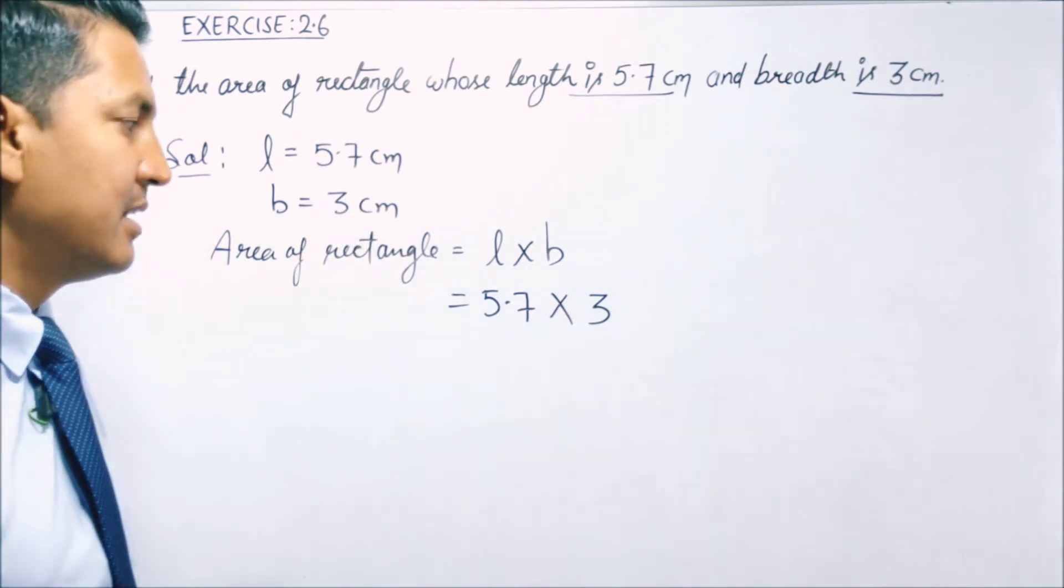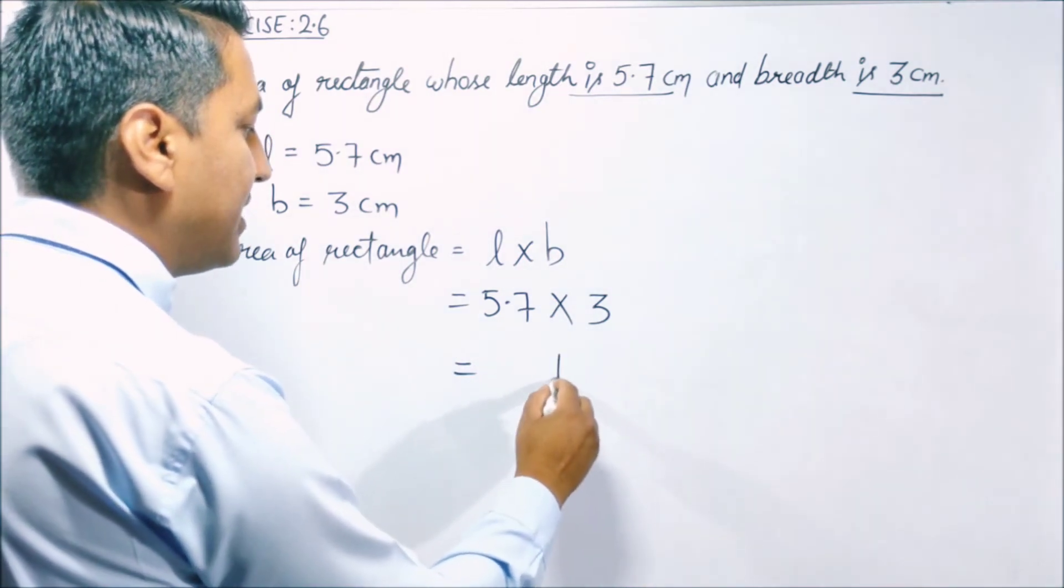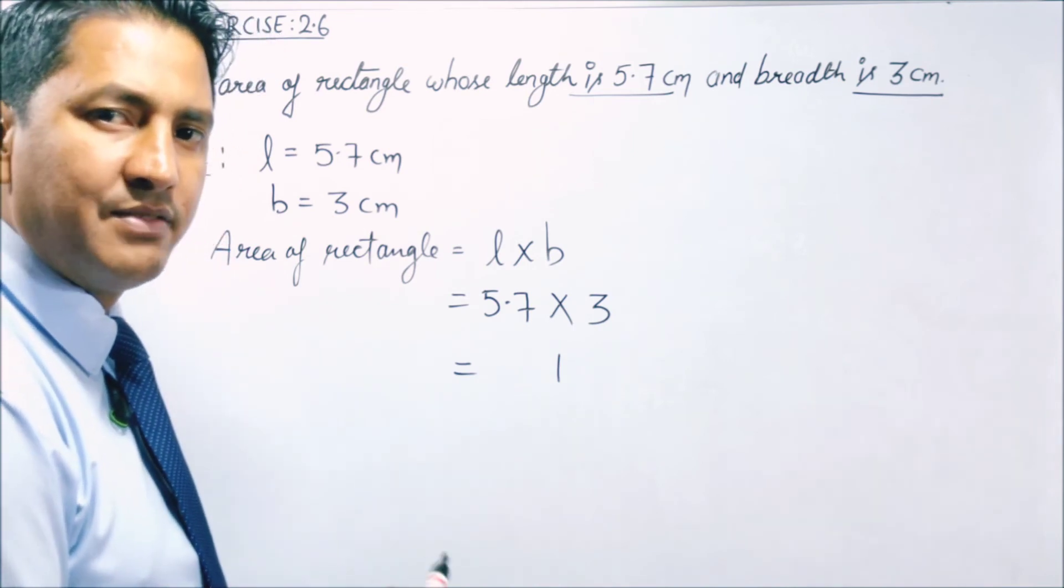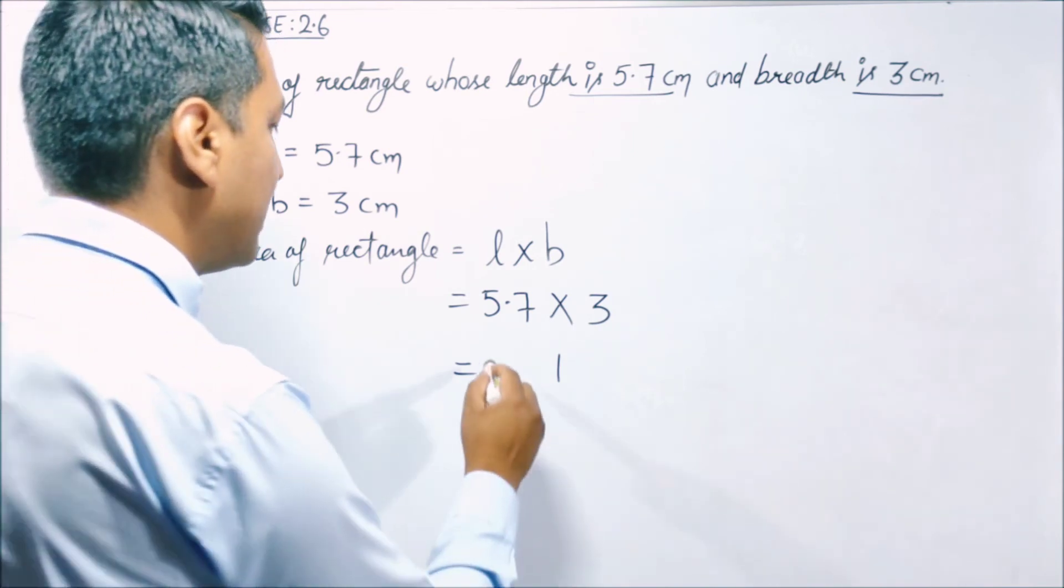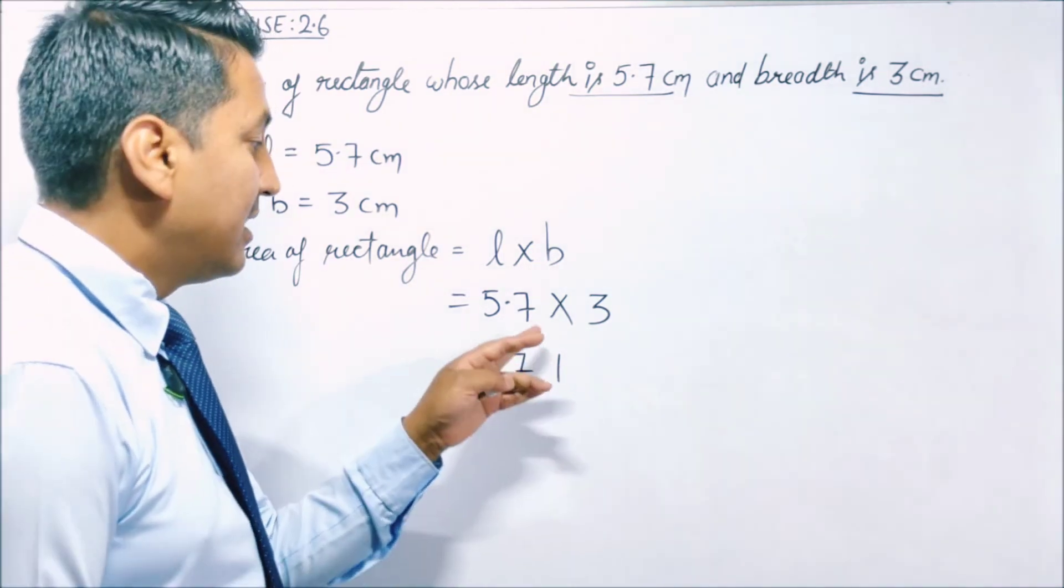तो हम simply multiply करते हैं. 3 × 7 = 21, 2 carry. 3 × 5 = 15, और 2 carry था, 15 + 2 = 17 हो गया. 17 लिए हमने. तो कितने place decimal है? One place है तो one place answer में लग जाएगा.